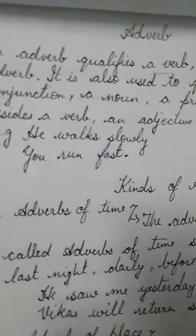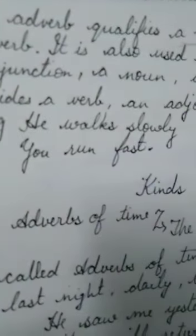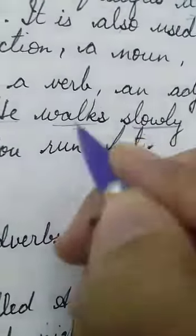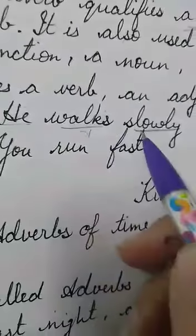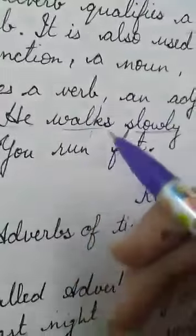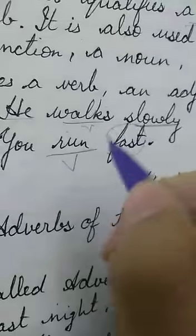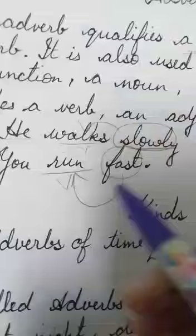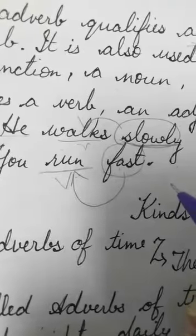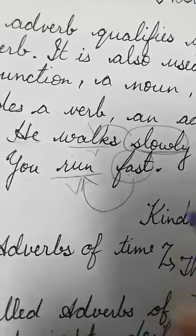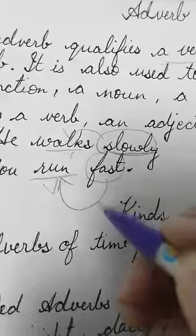Adverb qualifies everything. For example: he walks slowly. First of all, what is 'he'? He is a pronoun. What is 'walks'? Walks is a verb. Now, what is the work of 'slowly' in this sentence? Slowly is telling the way he walks. Another example: you run fast. This word is qualifying this verb. So in these sentences, slowly and fast are qualifying the verbs — walks and run — which are verbs. Means these two adverbs are qualifying the verb.